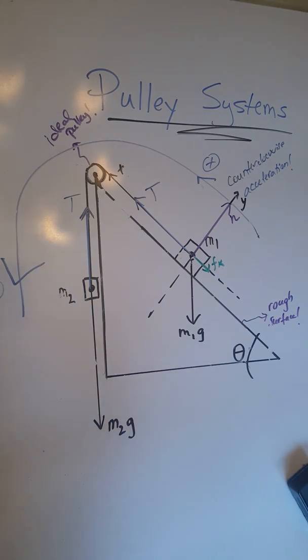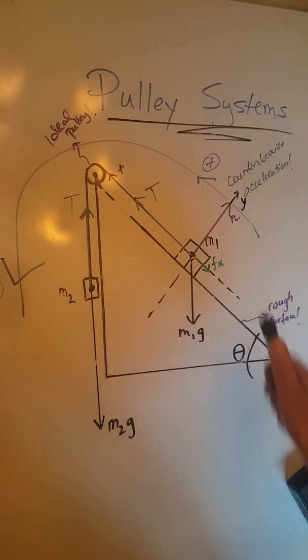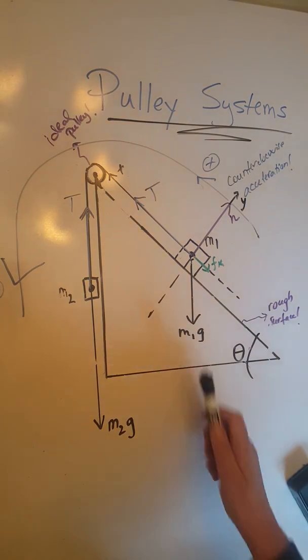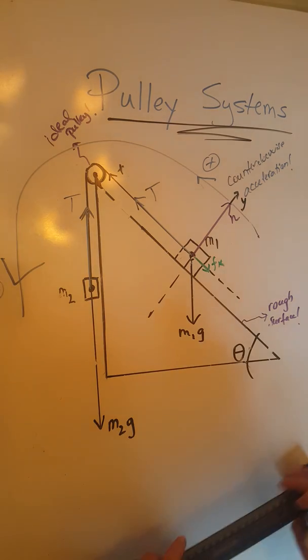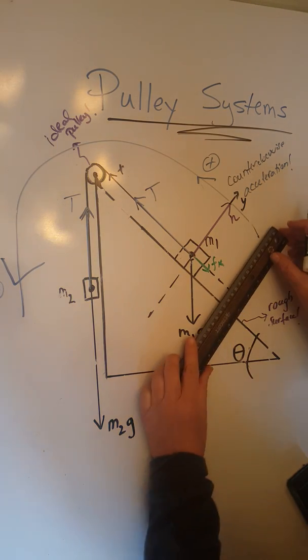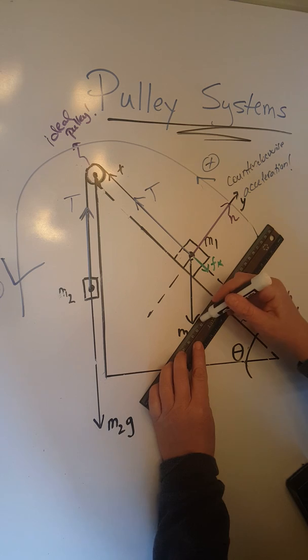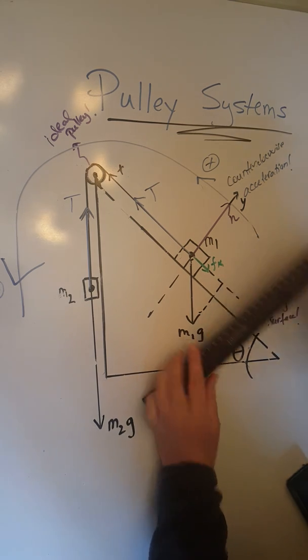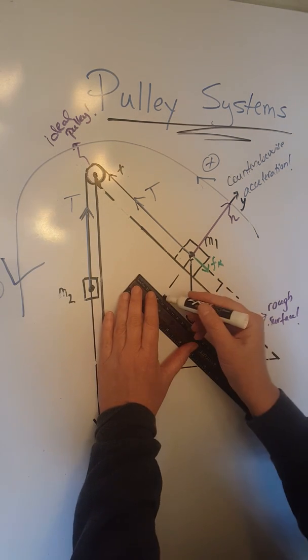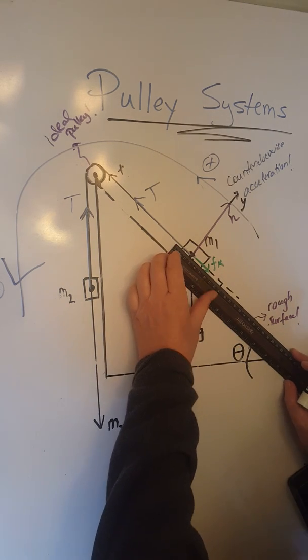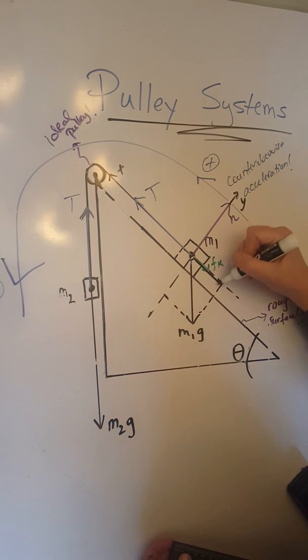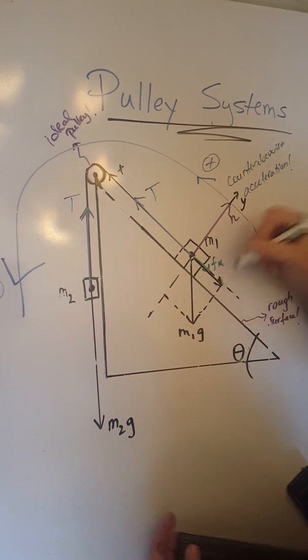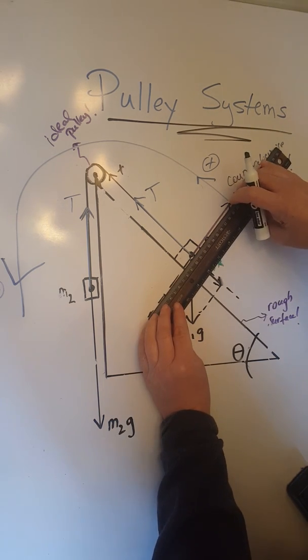And now we realize that out of the four forces acting upon M1, the only one that must be resolved is going to be M1g. We've done this before when we looked at other inclined plane problems. So let's carefully resolve M1g by drawing perpendiculars to the x and to the y. And then we have one component going in this direction, and another component going in this direction.